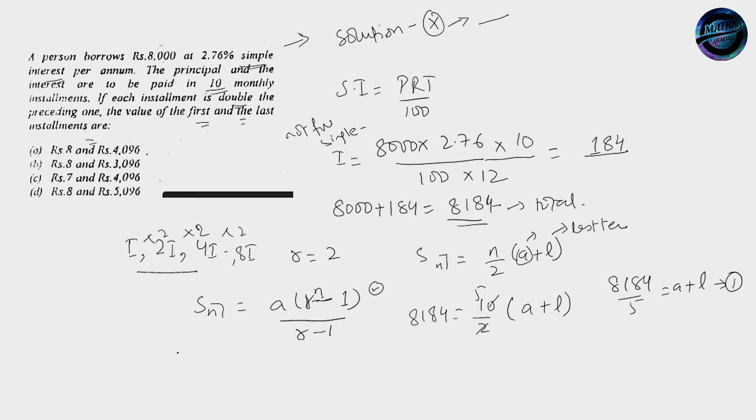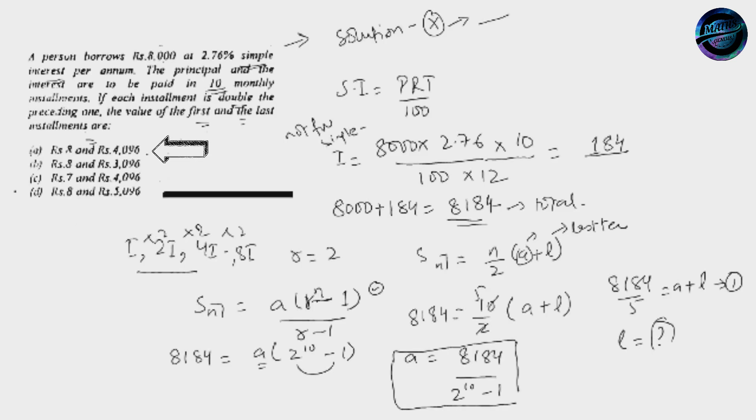Now over here, 8184 is equal to A into R, and R is 2, 2 power 10 minus 1 over 2 minus 1 is 1. From this equation I can directly find out A. And by substituting this value in the other one, I can easily find out L. By putting and plugging in the values, I am left with the value of this. That's the end of the session.